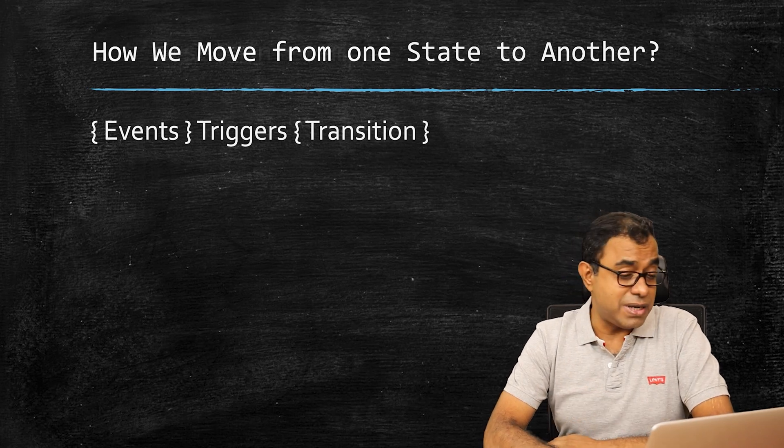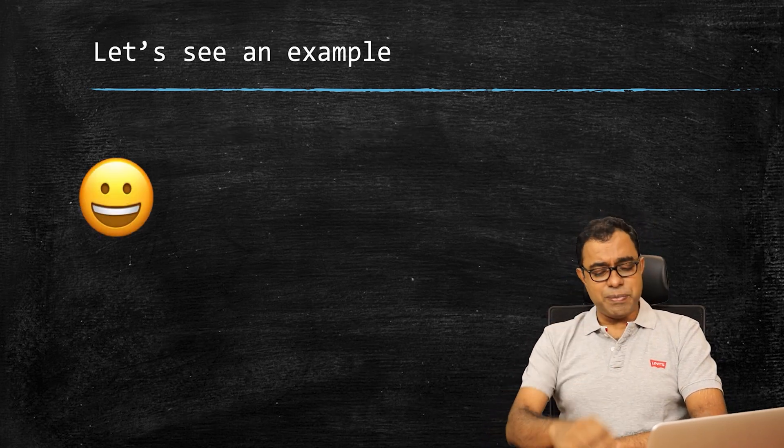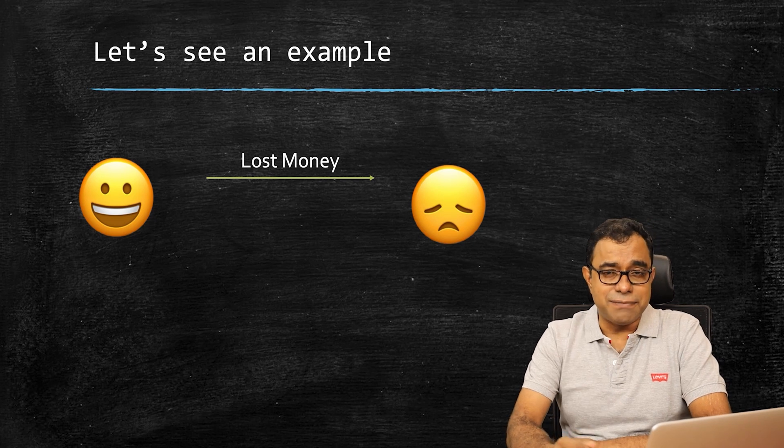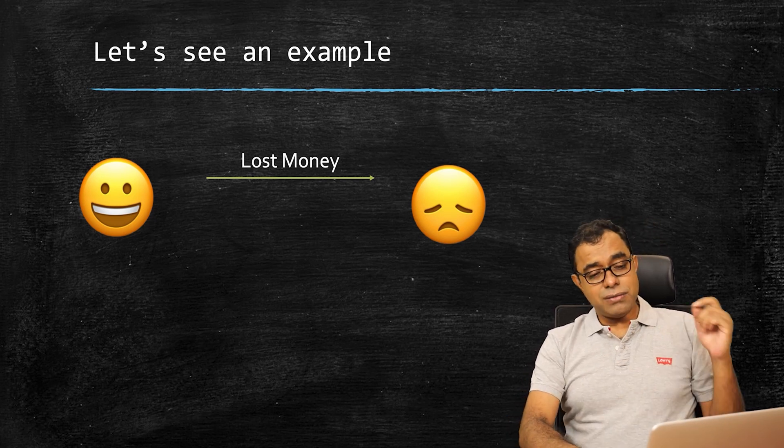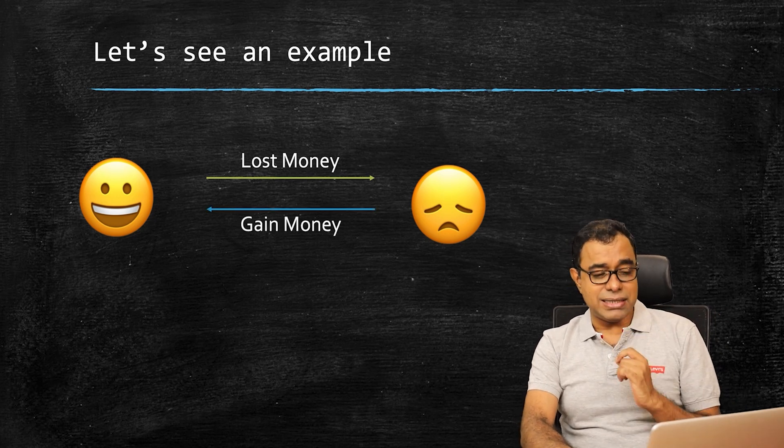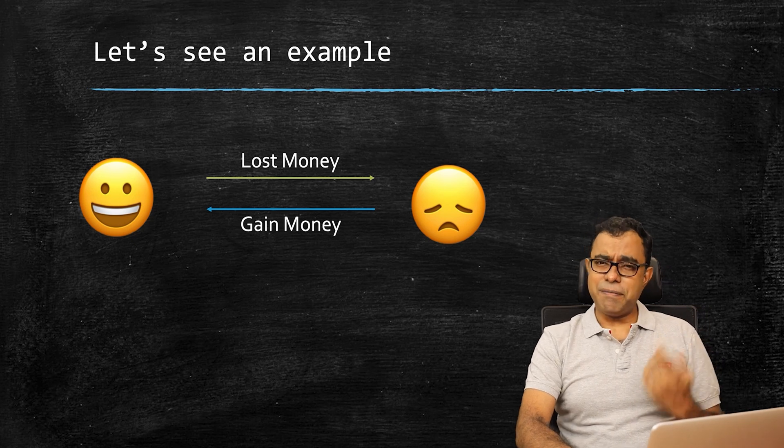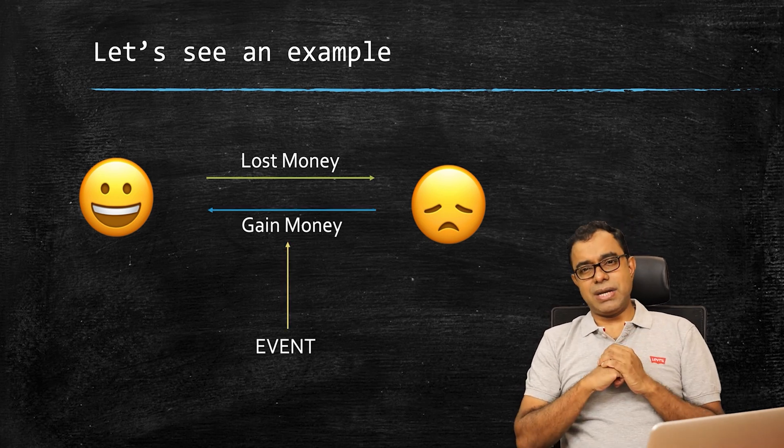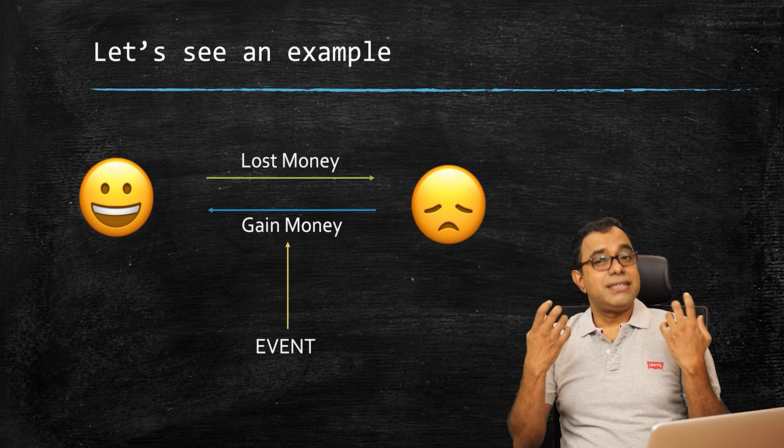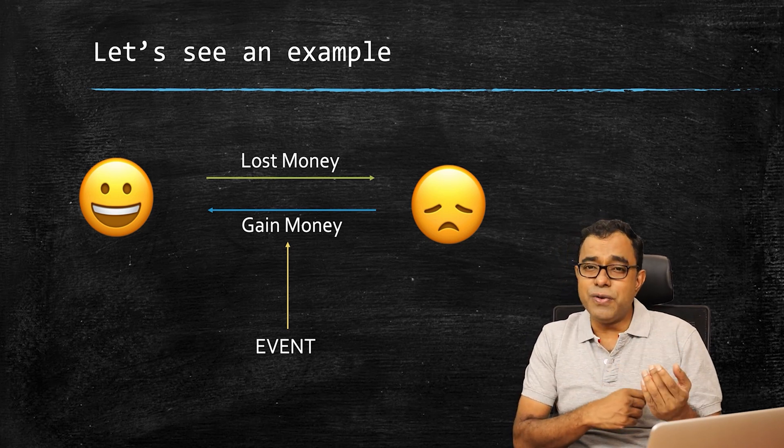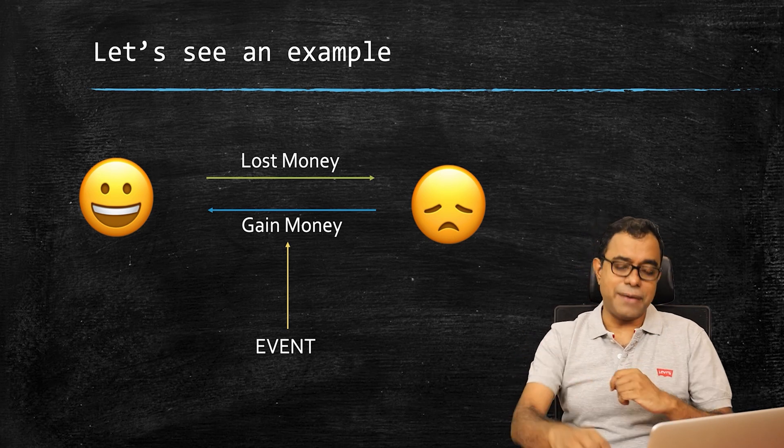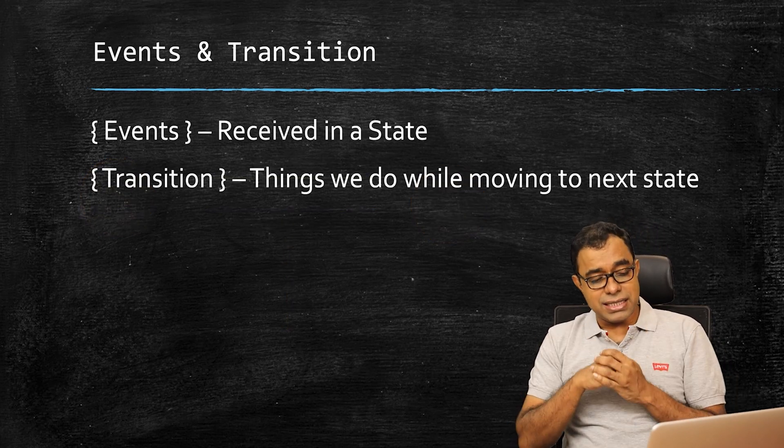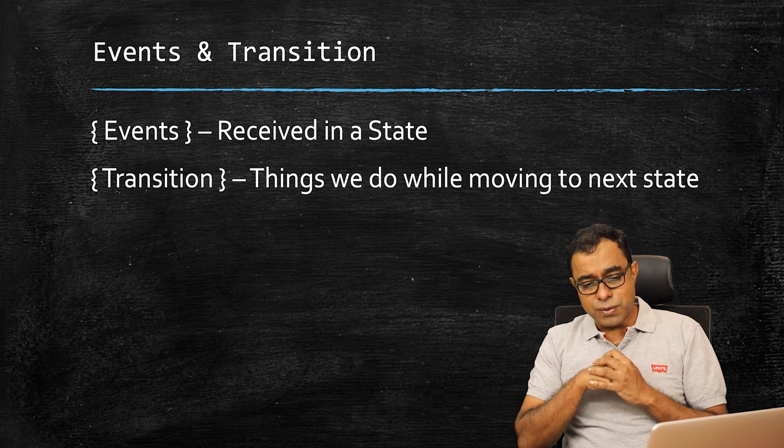So what happens is that when you are in a state, you will go to a different state only if some event has happened, and you will not go to a different state instantaneously. You will go to a different state by doing something in between. Let's see a very simple example. Someone is in a happy state and receives a message that you lost money. The person turns into a sad state. Of course, true for all of us. Now the person in the sad state receives a message that you gain money. The person moves back to happy state. So these things, gain money and lost money, what are they? They are events.